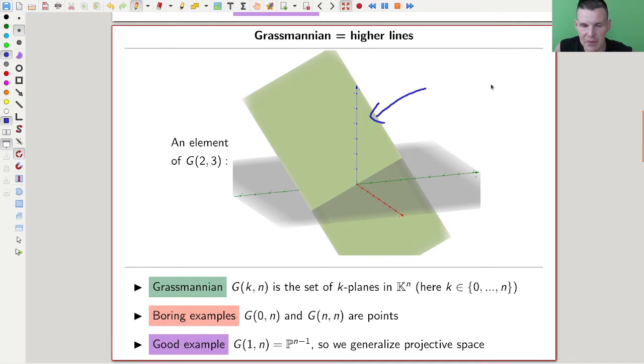Here's my picture of a plane, an element of the Grassmannian G(2,3). The real Grassmannian where you have real 3 space, and the plane is two dimensional. In general, G(k,n) is the set of k-planes in k to the n.